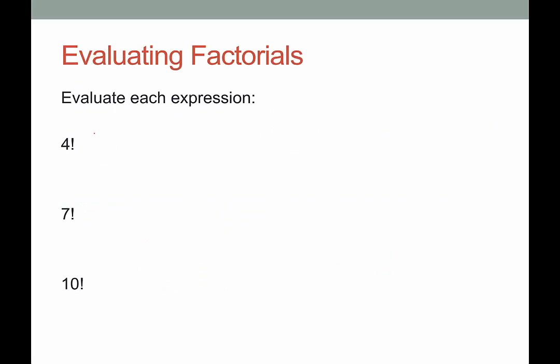We want to evaluate four factorial. This is not four exclamation point, it's not a really excited four, it's four factorial. So four factorial would be four times three times two times one, which would give us 24.